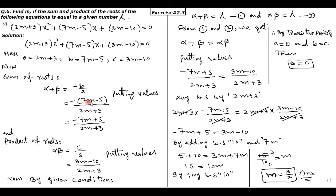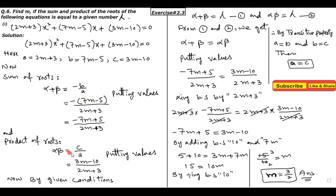Yeh minus andar multiply ho jayega, toh ban jayega minus 7m plus 5, divided by 2m plus 3. Ab product of roots ki baat karein toh formula hamare paas alpha beta is equal to C divided by A. C ki value 3m minus 10 hai aur A ki value 2m plus 3 hai. Yeh hamare paas aa gaya product of roots.